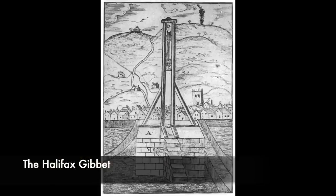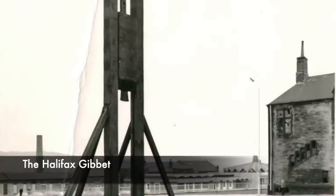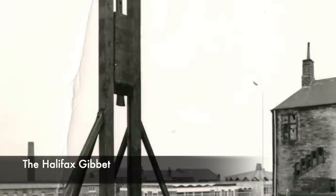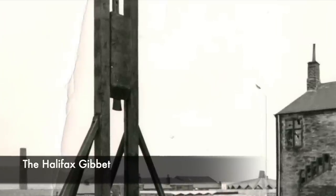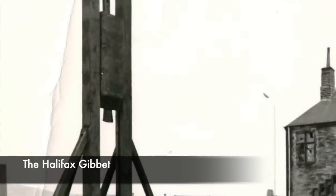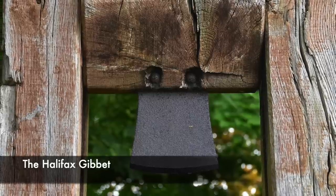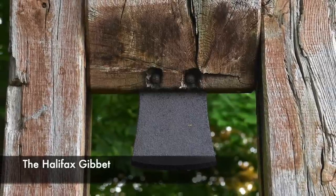It was said of the gibbet: 'In the nether end of the sliding block is an axe keyed or fastened with an iron into the wood, which being drawn up to the top of the frame, is there fastened by a wooden pin, and to the middest of which pin also there is a long rope fastened, that cometh down among the people. So that when the offender hath made his confession, and have laid his neck over the nethermost block, every man there present doth either take hold of the rope or put it forth his arm, in token that he is willing to see true justice executed, and pulling out the pin in this manner, the head block wherein the axe is fastened doth fall down with such violence, that if the neck of the transgressor were so big as that of a bull, it would be cut in sunder at a stroke, and roll from the body at a huge distance.'